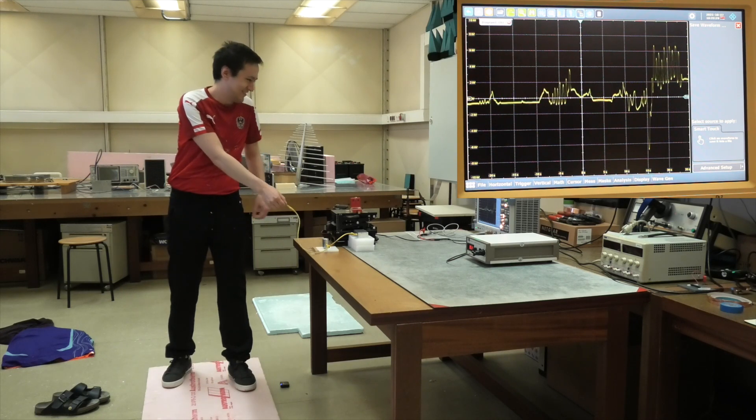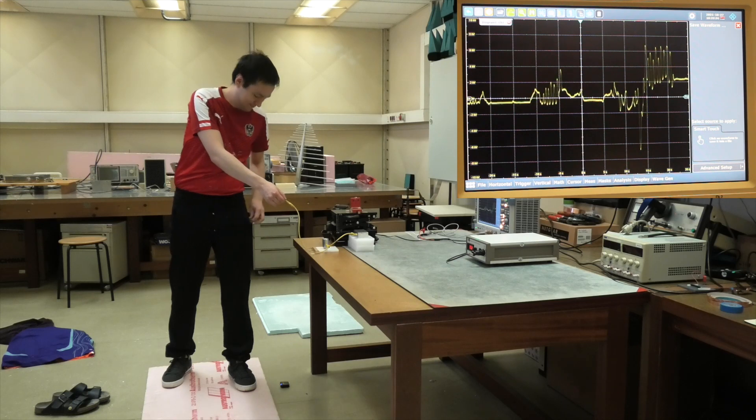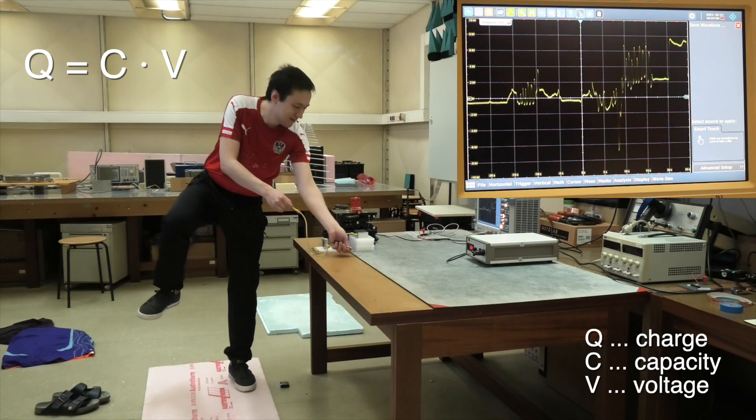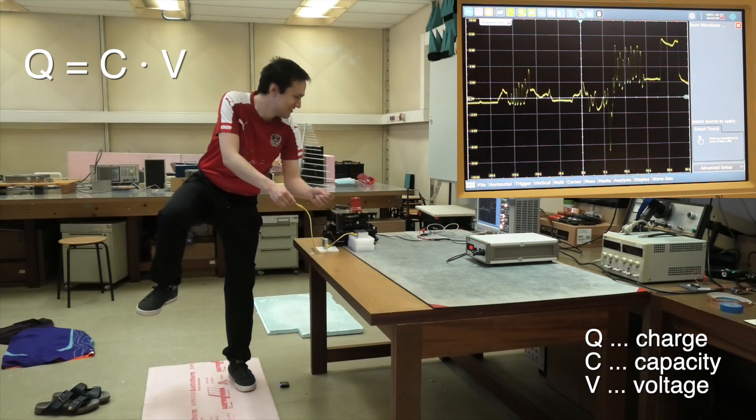But I still have one trick left. By lifting one leg, I reduce my capacity to ground. By assuming a constant charge, my voltage must therefore increase.